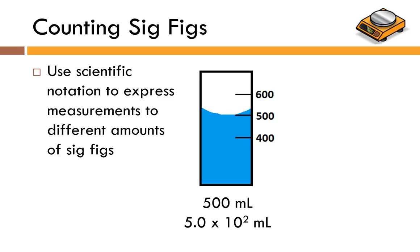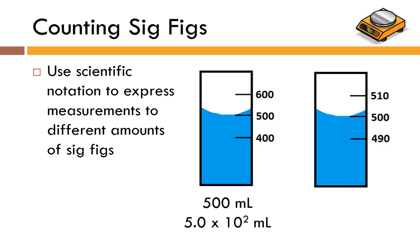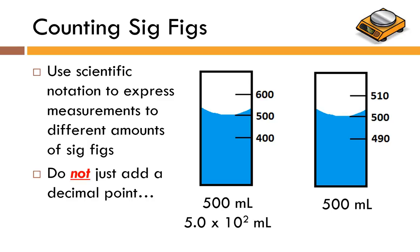Say you've got a large graduated cylinder where you know the volume is somewhere between 500 and 600 mL — you know the hundreds place and estimate the tens place, so you should have two sig figs. Express that as 5.0 × 10² mL. With an even larger graduated cylinder where you know the hundreds, the tens, and estimate the ones place, you can go to three sig figs — write it as 5.00 × 10² mL. Notice those are numerically the same number, but in sig fig terms they represent two different measurements. Be very careful about that.